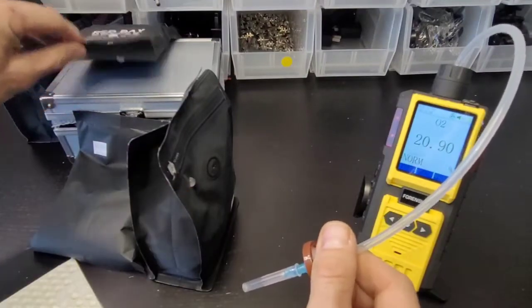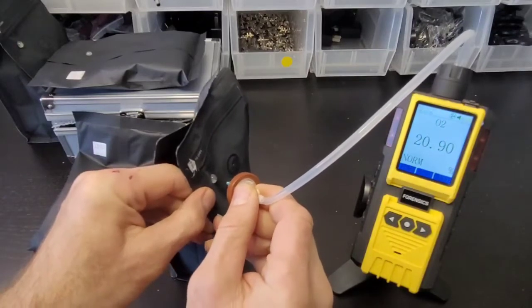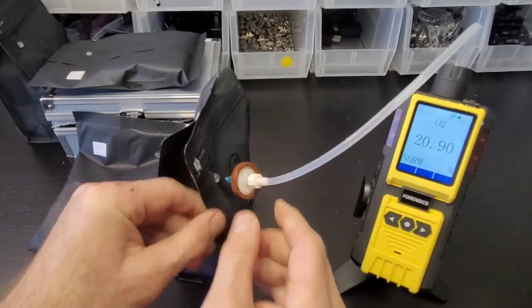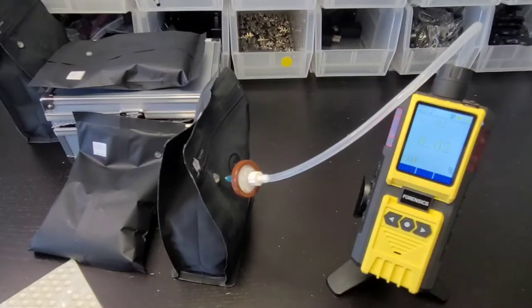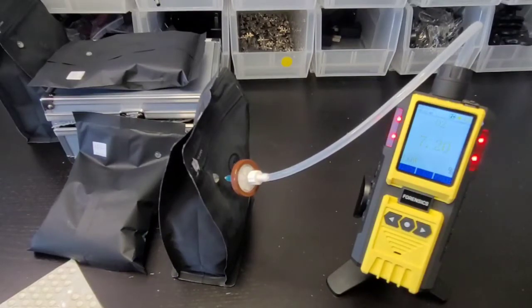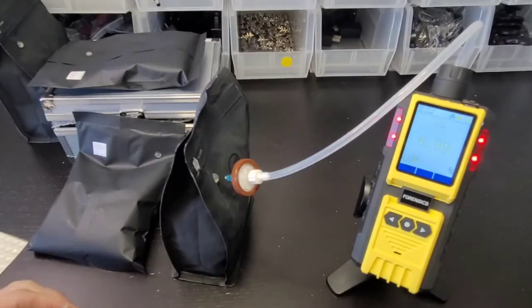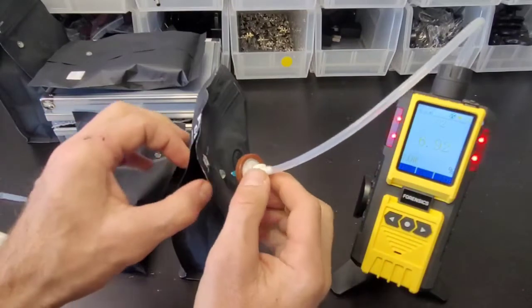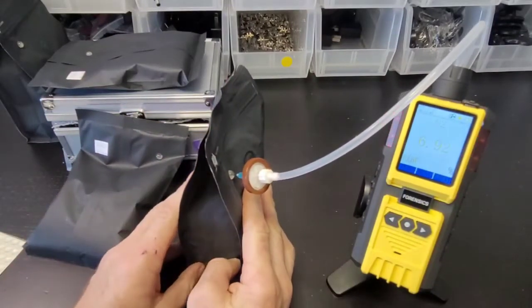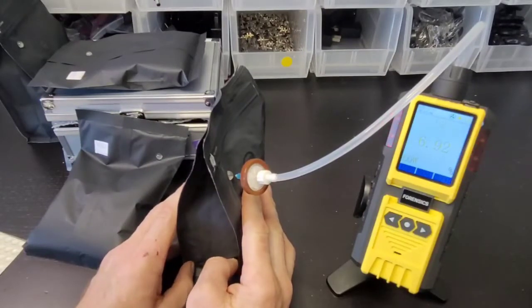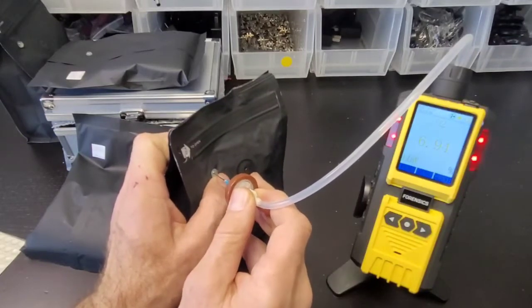Let's do this second package. It's going down, less than 8%, so it looks like a lower concentration of oxygen. 6.92 is the lowest. We can pop that out. As you can see, it takes less than 30 seconds.